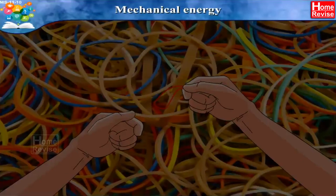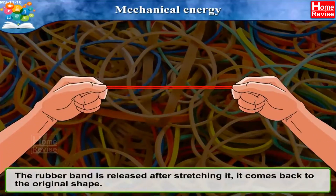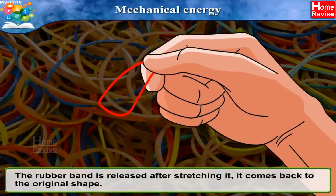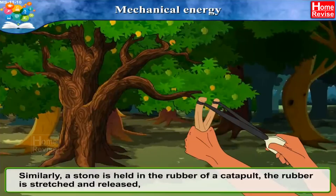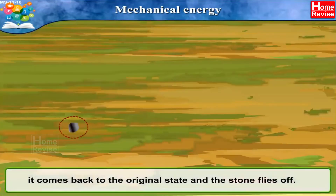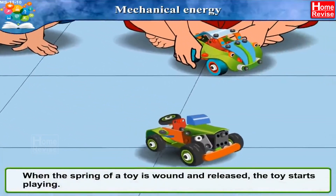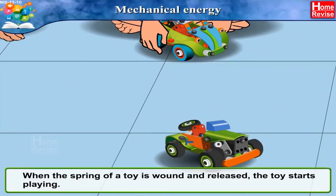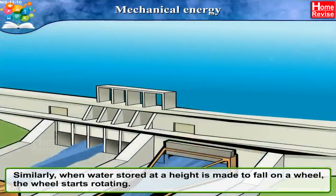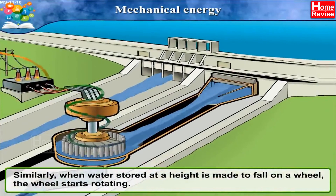Mechanical energy: observe what happens as a result of the actions in the picture. A rubber band is released after stretching — it comes back to its original shape. Similarly, a stone is held in the rubber of a catapult; the rubber is stretched and released, it comes back to its original state, and the stone flies off. When the spring of a toy is wound and released, the toy starts playing. When water stored at a height is made to fall on a wheel, the wheel starts rotating.